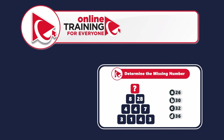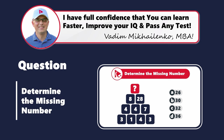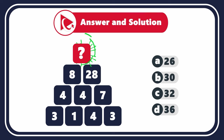Prepare to tackle this intriguing assessment test question, designed not just to test your mental math abilities but also to foster your analytical skills for day-to-day life. You need to determine the missing number located on top of the pyramid. The other numbers are 8 and 28 in the second row, and 4 in the third row.